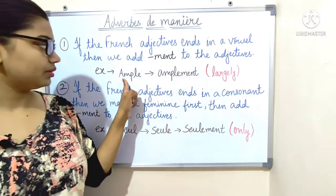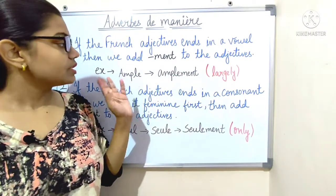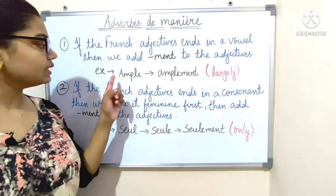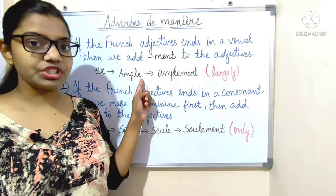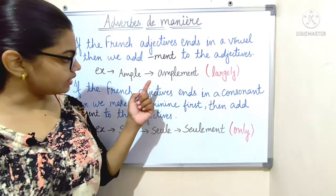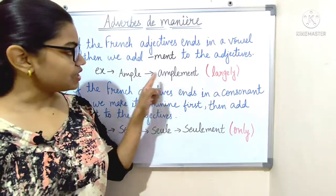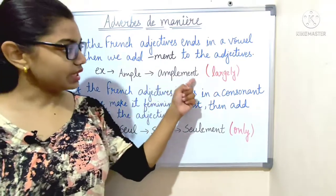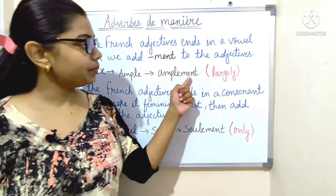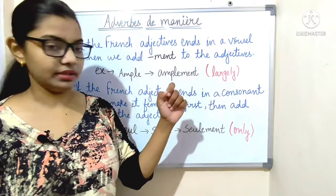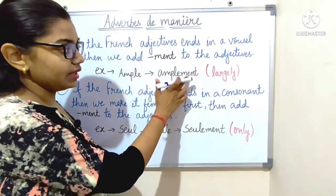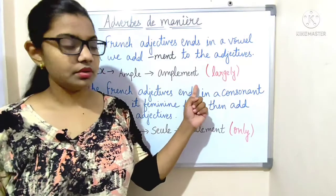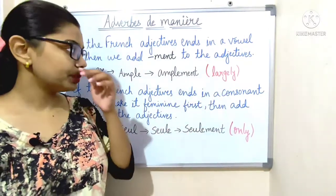For example, 'ample' — this ends with the vowel E. So we just add '-ment' directly: A-M-P-L-E-M-E-N-T. So 'ample' becomes 'amplement', which means 'largely'.